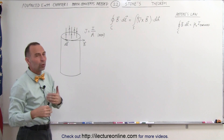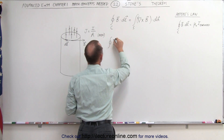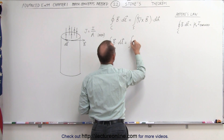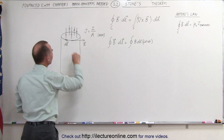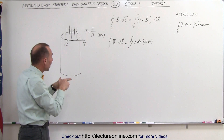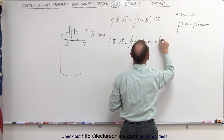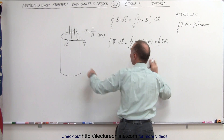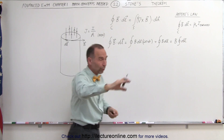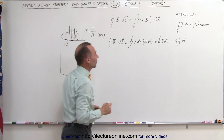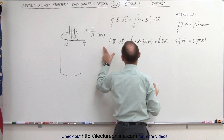Let's take a look at the left side of the equation first. The integral around the curve of B dot dL is equal to the integral of B times dL times the cosine of the angle between the two. Notice that both B and dL will always be in the same direction; therefore, the angle between them is zero, and the cosine of zero is one. Since B is assumed to be constant along that path, this is equal to B times the integral of dL. Assuming the radius is R, this equals B times 2πR.